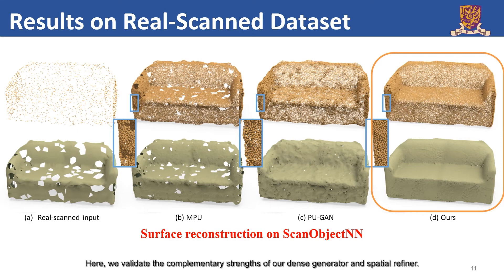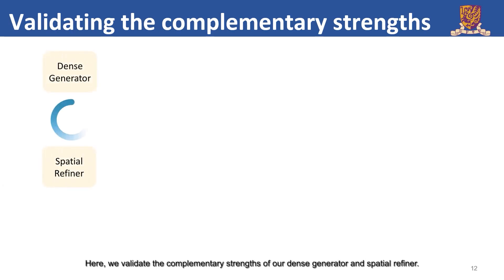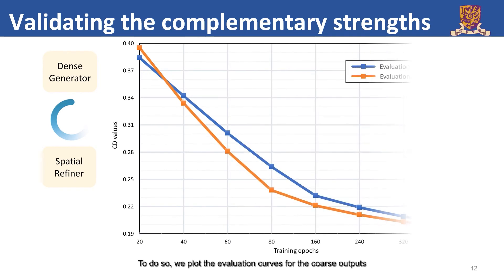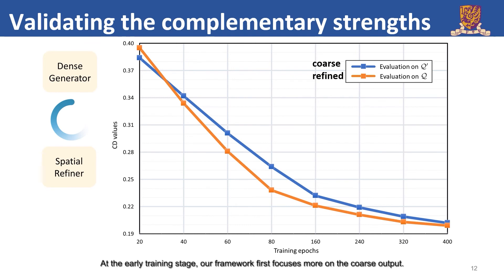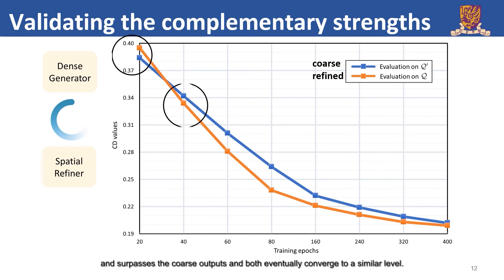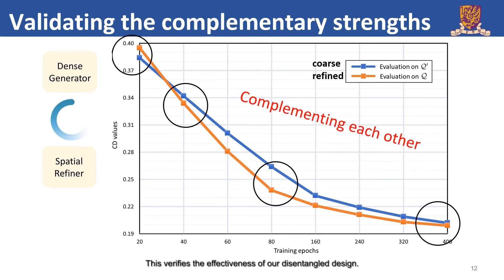Here, we validate the complementary strengths of our dense generator and spatial refiner. To do so, we plot the evaluation curves for the coarse outputs and the refined results during the training process. At the early training stage, our framework first focuses more on the coarse output. But as the training progresses, the performance of the refined results rapidly improves, surpasses the coarse outputs, and both eventually converge to a similar level. This verifies the effectiveness of our disentangled design.